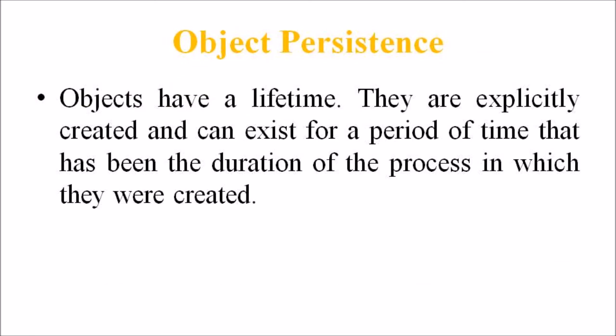While considering static and dynamic binding, the next term is object persistence. As we discussed, objects are runtime entities of a class — simply an object or instance of a class. An object has a lifetime; they are explicitly created and can exist for part of the duration of the process in which they were created. A file or database can provide support for objects having a longer lifetime than the duration of the process for which they were created. This characteristic is called object persistence — simply, the lifespan of an object that is created.